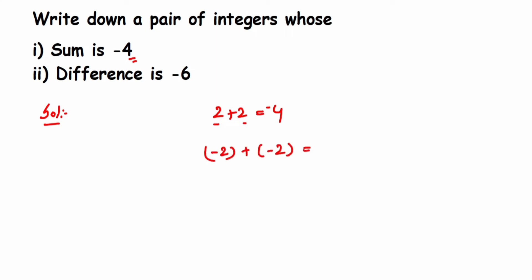Because numbers with the same sign we always add them. So 2 plus 2 is 4, and since both numbers have a negative sign we'll get a minus sign. So this is one pair. There are many pairs, you can take any example. So the first pair will be minus 2 plus minus 2 equals minus 4.